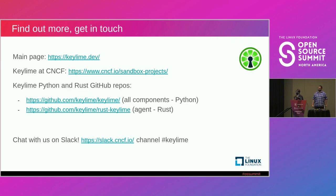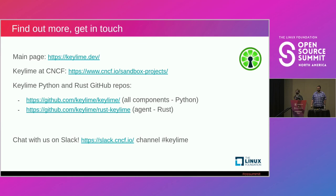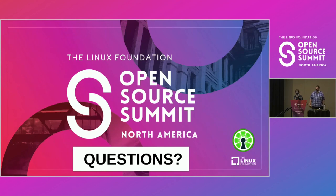If you're intrigued by this project, you can find more information at keylime.dev or find Keylime under the CNCF sandbox projects. We welcome contributions — the main repo covers all Python components and there's a separate repo for the Rust agent. The best way to get in touch is the #keylime channel on the CNCF Slack, which reaches a broad community of people who care about this project. Thank you all for being here; we'll take some questions and will also be at the Red Hat booth after this talk.